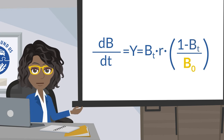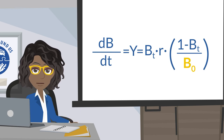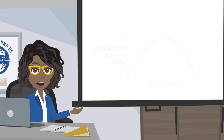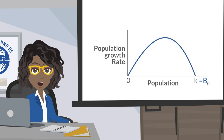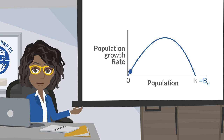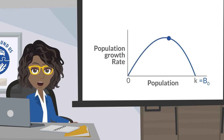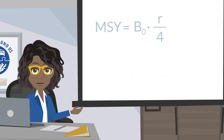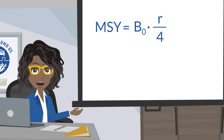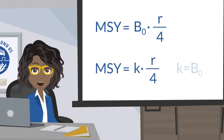b0 is the carrying capacity of the ecosystem for this population. Note that b0 is the same as k in the previous equation, and it is so called because before a population becomes exploited at time zero, its biomass more or less corresponds to carrying capacity. Schaefer's model also implies MSY equals b0 multiplied by r over 4, or MSY equals k multiplied by r over 4, given k equals b0.